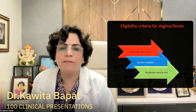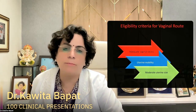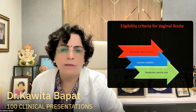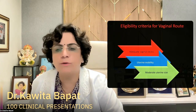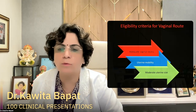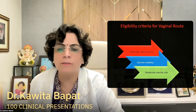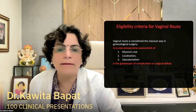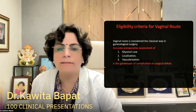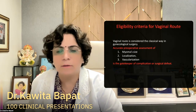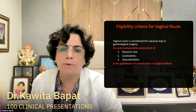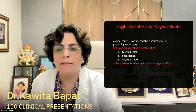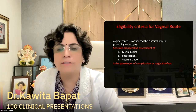There should be some eligibility criteria for vaginal route myomectomy. Number one, there should be adequate vaginal access. Uterine mobility should be good and uterus size should be moderate — not more than 250 to 350 grams. Correct mapping and location of the fibroid should be confirmed. Other criteria include myoma size, localization, and vascularization — how much color flow is present and whether there is any change in vascularity or consistency of the fibroid.